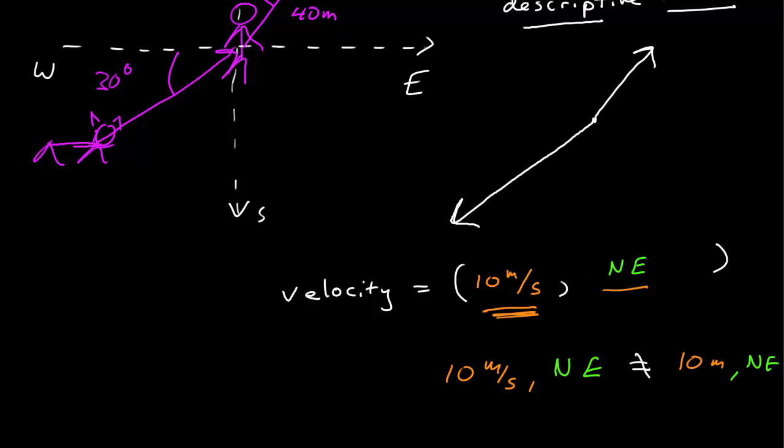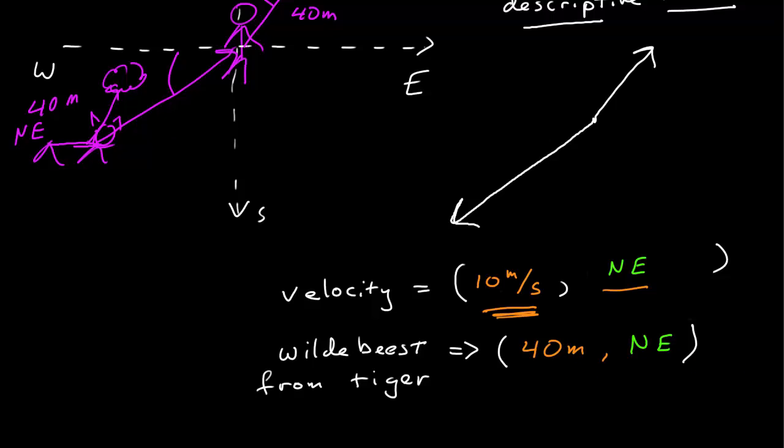What they don't have to be is in the same place. So let's say, for example, you don't need to run to the tree, because there is a wildebeest that is much closer. In fact, it's sitting here at a distance of 40 meters directly northeast of the tiger. If we write that vector out, so here's the vector describing the displacement, the location, of the wildebeest from the tiger. It's 40 meters from the tiger at a direction directly northeast.